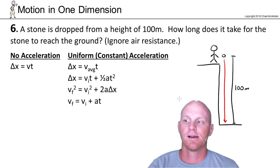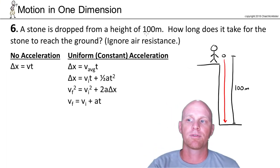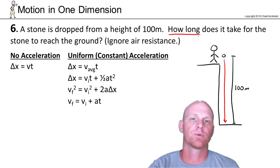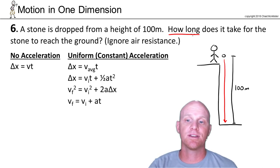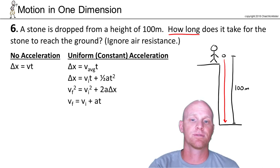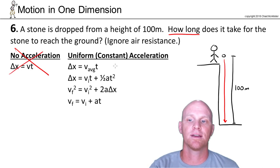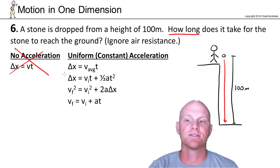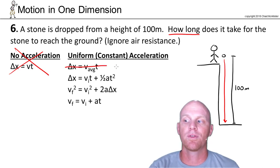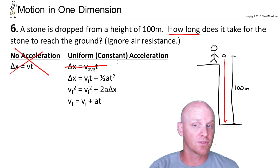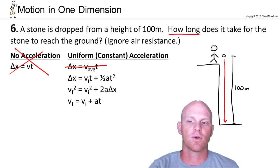On problem number six, a stone is dropped from a height of 100 meters, and the question is how long does it take for the stone to reach the ground — ignore air resistance. First we ask: is there an acceleration? With this being vertical movement, we do have acceleration due to gravity toward the center of the earth, so we're not using the constant-velocity equation. Of our uniform-acceleration equations, we won't use the first one. The initial velocity is zero — the stone is dropped from rest — but we don't know the final velocity, so finding an average velocity is problematic.